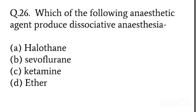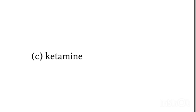Which of the following anesthetic agent produces dissociative anesthesia? Dissociative anesthesia means to get dissociated from the present situation — you are dissociated into another side, taken to another world. Options: halothane, sevoflurane, ketamine, and ether. Among these, there is one drug which is the actual drug of choice for dissociative anesthesia — that is ketamine.